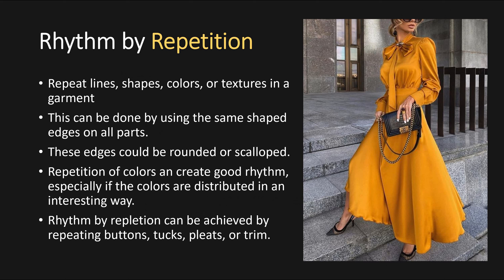Rhythm by repetition means a repetition of lines, shapes, colors, or textures in a garment. This can be done by using the same shaped edges on all parts — the same edges could be rounded or scalloped. Repetition of colors can create good rhythm, especially if the colors are distributed in an interesting way. Rhythm by repetition can also be achieved by repeating buttons, tucks, pleats, or trim.